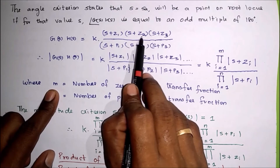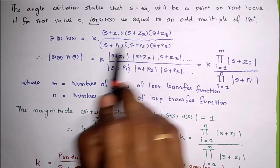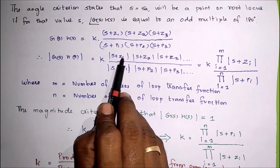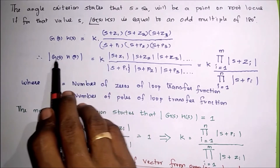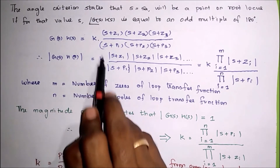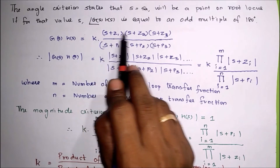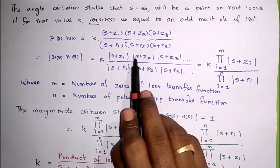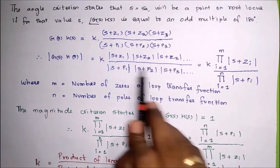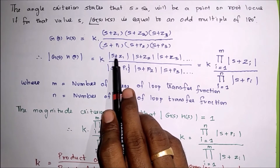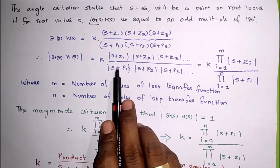Now, G(S) into H(S) may consist of a constant K, with zeros in the numerator and poles in the denominator. To calculate magnitude, we take the modulus on both sides. Modulus of G(S)H(S) equals 1 equals K times the individual modulus of each zero and each pole — meaning the magnitude of zero 1, zero 2, zero 3, pole 1, pole 2, pole 3.